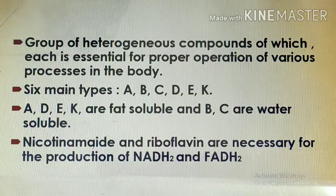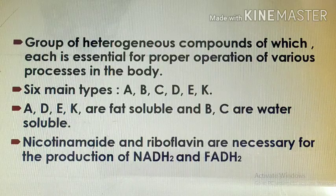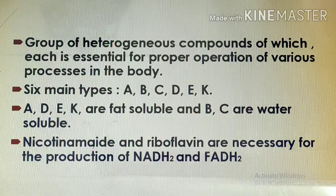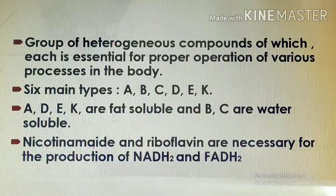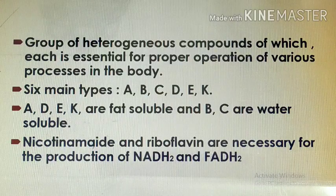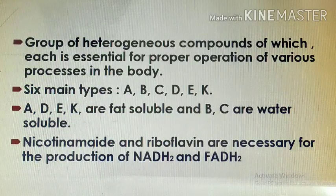If we consume vitamin B and C in excess amount, there is no side effect on the body because they are eliminated outside the body through urine. But vitamins A, D, E, and K must be consumed in proper amounts. Nicotinamide and riboflavin are necessary for the production of NADH2 and FADH2. These are two coenzymes produced during cellular respiration, and if there is a deficiency of these two vitamins, no formation of NADH2 and FADH2 takes place in the body.